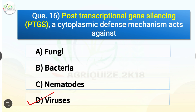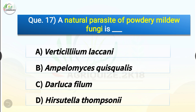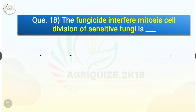In plants, PTGS functions as a natural defense mechanism against viruses. Question number seventeen: A natural parasite of powdery mildew fungi is dash. The correct answer is option B, Ampelomyces quisqualis. The fungus Ampelomyces quisqualis is a naturally occurring hyperparasite of powdery mildews. It infects and forms pycnidia within powdery mildew hyphae, conidiophores, and cleistothecia — the closed fruiting bodies of powdery mildews.